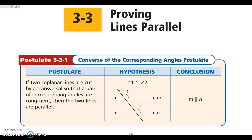Alright, hey everybody. Today we are looking at section 3.3, which is proving lines are parallel. In the last section 3.2, we talked about how if we had parallel lines, then we knew that our corresponding angles, our alternate interior, and our alternate exterior angles were all congruent, and that our same side interiors were supplementary. Today we're going to be looking at that same concept, but the converse.